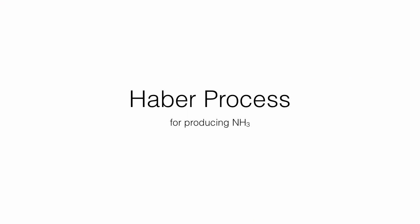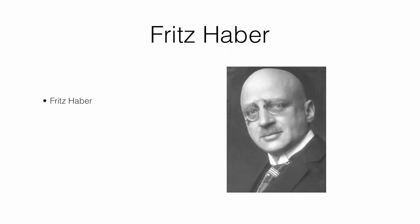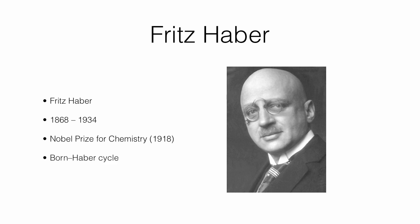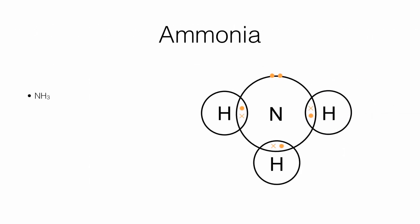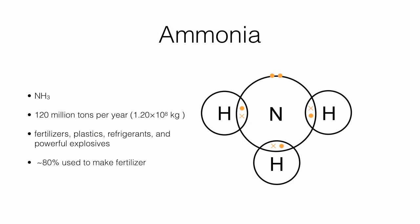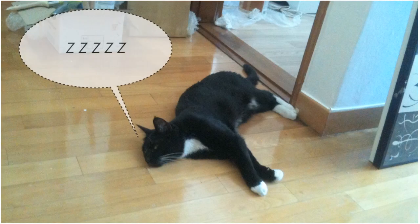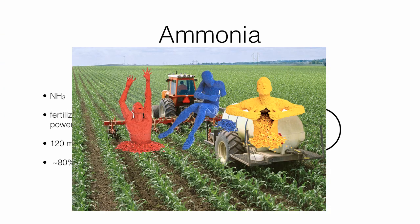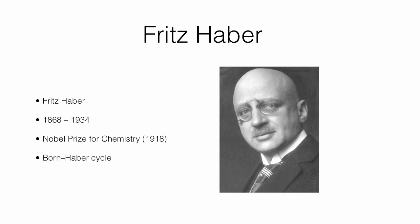Next is the Haber Process for producing ammonia. It was invented by Fritz Haber, a German scientist who earned the Nobel Prize for Chemistry in 1918, specifically for inventing the Haber Process. He's also known for his work with Born, inventing the Born-Haber Cycle. Ammonia is one nitrogen atom bonded to three hydrogen atoms. We make 120 million tons per year worldwide. It's used for fertilizers, plastics, refrigerants, and powerful explosives — about 80% of all that is used to make fertilizer. Ammonia makes many things we all need, and we have Fritz Haber to thank for that.